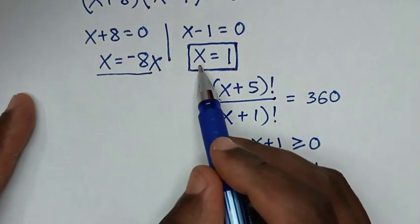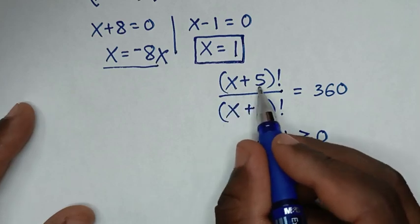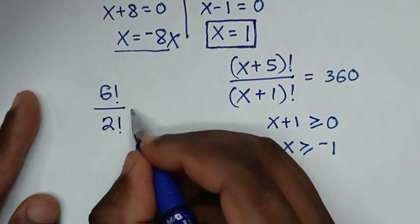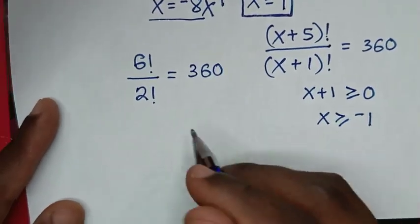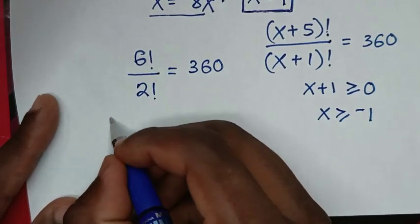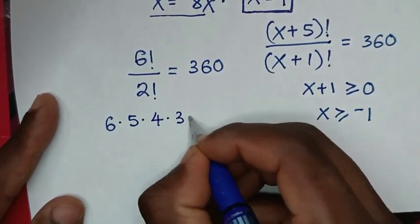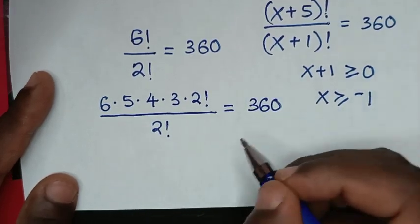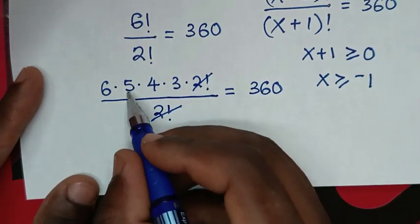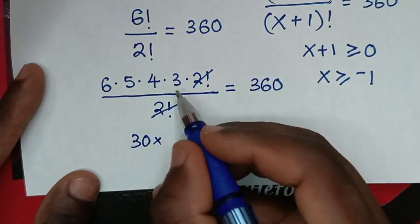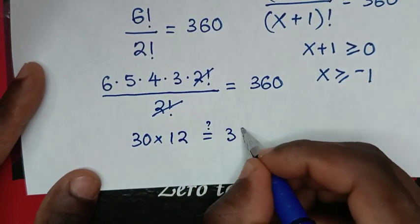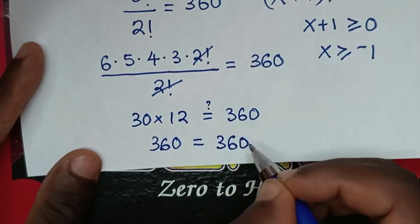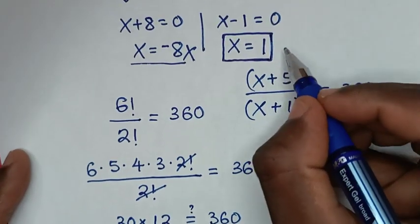Substituting x = 1 into the original problem: (1+5)! / (1+1)! = 6!/2! = (6×5×4×3×2!) / 2! = 6×5×4×3 = 360. The left side equals the right side, confirming that x = 1 is correct.